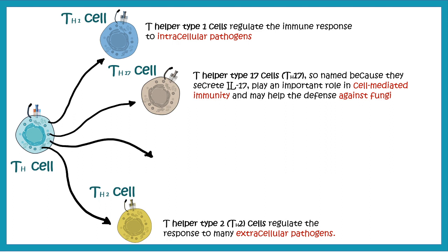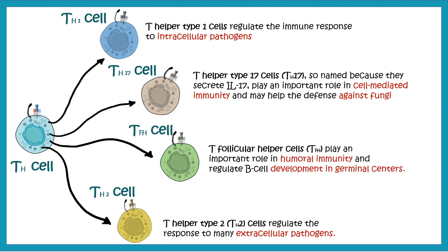There is another variety known as T follicular cells, which are important for humoral immunity. They augment B cell response and are solely present in the germinal center. All of these subtypes of T cells can be formed from T helper cells depending upon the cytokine that is present.